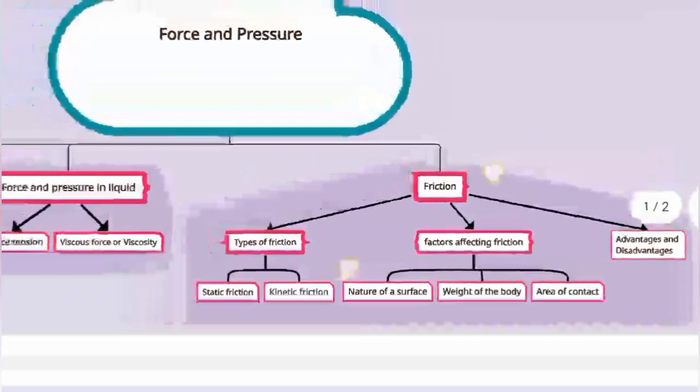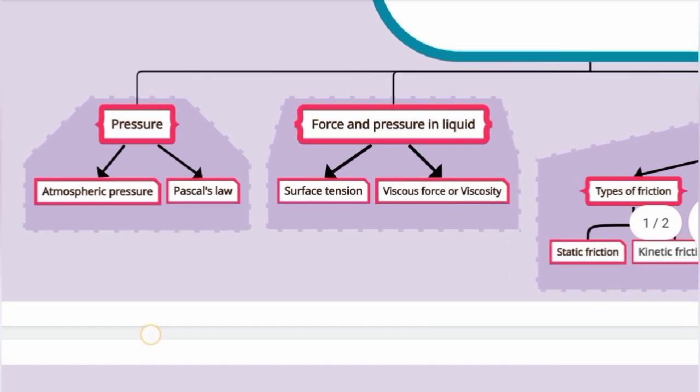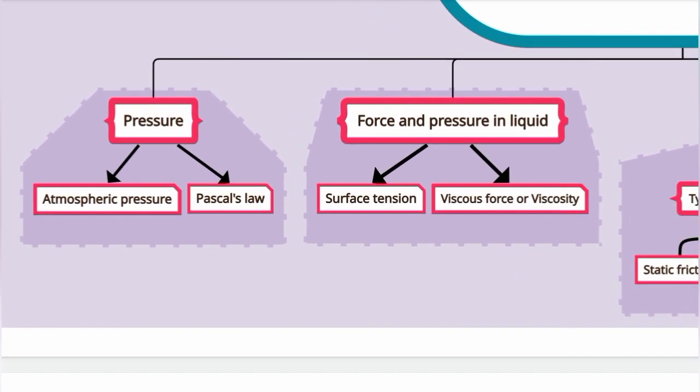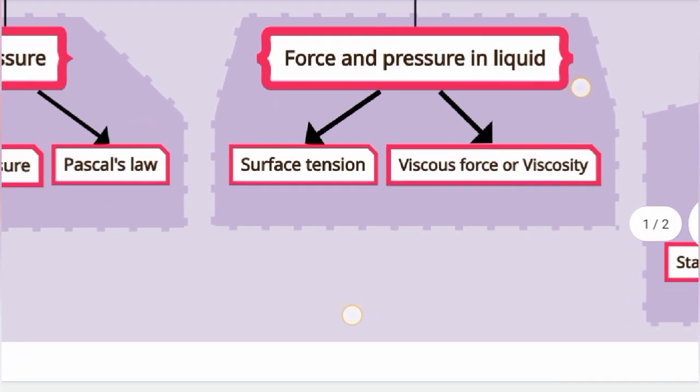So regarding force and pressure — first pressure, atmospheric pressure, and then Pascal's law. In the classwork note, it is very short: Pressure, Atmospheric pressure, Pascal's law, Force and pressure in liquid, Surface tension — that is the definition and then SI unit. Then viscous force or viscosity — the definition of viscosity, and then viscous force unit called poise in the CGS system, and kilogram per meter per second (NSM⁻²) in the SI system.